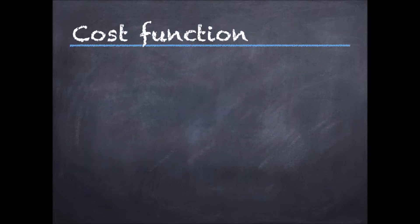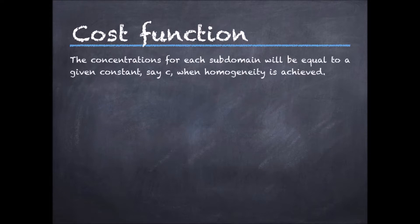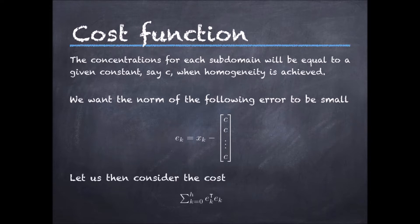The cost function should penalize deviations from homogeneity. Note that at homogeneity all the concentrations in the subdomain will be the same and equal to a constant, say c. If we define an error vector as x_k minus a vector with all the entries set to c, we would like to drive this error vector to zero. A good cost function is then to penalize the norm or the norm squared of this error at each iteration until a given horizon corresponding to the time length we are interested in.